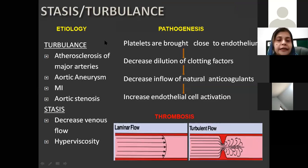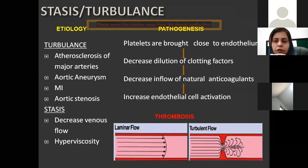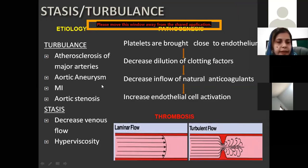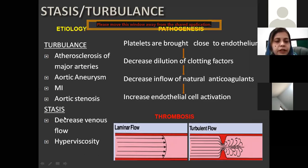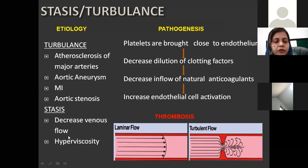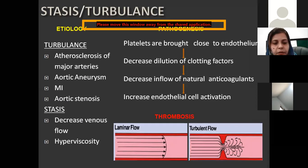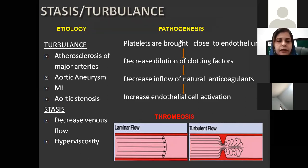Now, the blood flow — any disruption of the normal blood flow can also cause thrombus formation. It could be atherosclerosis of the major arteries, which disrupts the normal path of blood flow when atherosclerotic plaques are attached to the lining. Then there could be aortic aneurysm, myocardial infarction, or narrowing of the aorta. Any of these conditions causes increased or turbulent blood flow. On the other hand, reduced flow could be due to decreased venous return or hyperviscosity — a term used when there is an increase in plasma proteins making the blood viscously thick.